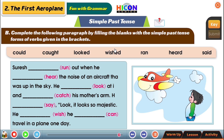Let's fill the blanks one by one. The simple past tense of 'run' is 'ran'. So Suresh ran out. The past tense of 'hear' is 'heard'. When he heard the noise of an aircraft that was up in the sky. The past tense of 'look' is 'looked'. He looked at it.